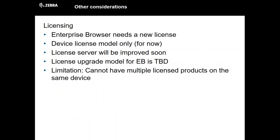Finally, in terms of general considerations: licensing. The licensing model between Pocket Browser, RhoElements, Shared Runtime, and Enterprise Browser has not changed since around 2008, so it's getting fairly old. They are talking about upgrading the license system at some point in the future. Just bear in mind you can't have multiple products licensed on the same device — it's a bit of an oversight — and it's going to be a per-device license. That's the licensing model for now; it might change in the future, but be aware of these limitations.